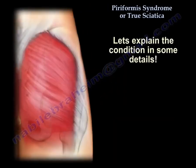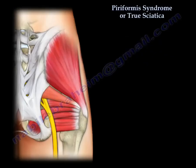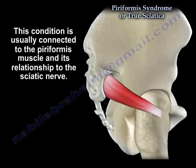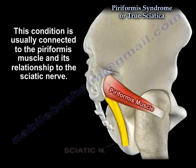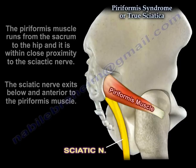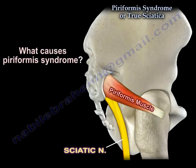Let's explain the condition in some detail. Piriformis syndrome is a condition that has sciatic nerve symptoms due to compression of the sciatic nerve around the buttock and the hip. This condition is usually connected to the piriformis muscle and its relationship to the sciatic nerve. The muscle runs from the sacrum to the hip and is in close proximity to the sciatic nerve, which exits below it and is anterior to it.